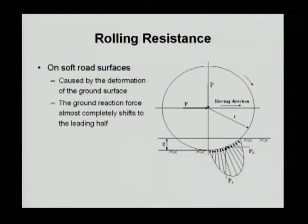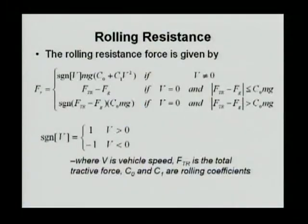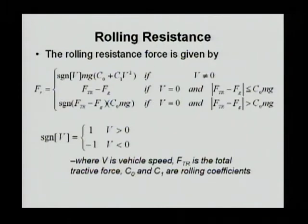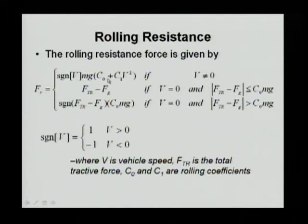Another scenario occurs when the vehicle rolls on a soft road surface. In that case, the wheel may not change shape, but the road surface changes, so the wheel is rotating against a deforming wall. To calculate rolling resistance, there are two coefficients: C0 and C1. Rolling resistance equals C0 plus C1 times V squared. Since C1 is generally small, C0 is dominant, so Mg times C0 is the rolling resistance.